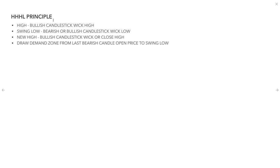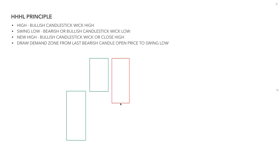When it comes to drawing demand on a price chart, we need to follow some simple rules. First, prices need to create a high - it could be just two candles. Then we want a swing low with a bearish candle and its wick low. After that, we're looking for a bullish candlestick wick or close high - the next candle has to either close above the previous candle or create a wick and close bullish.